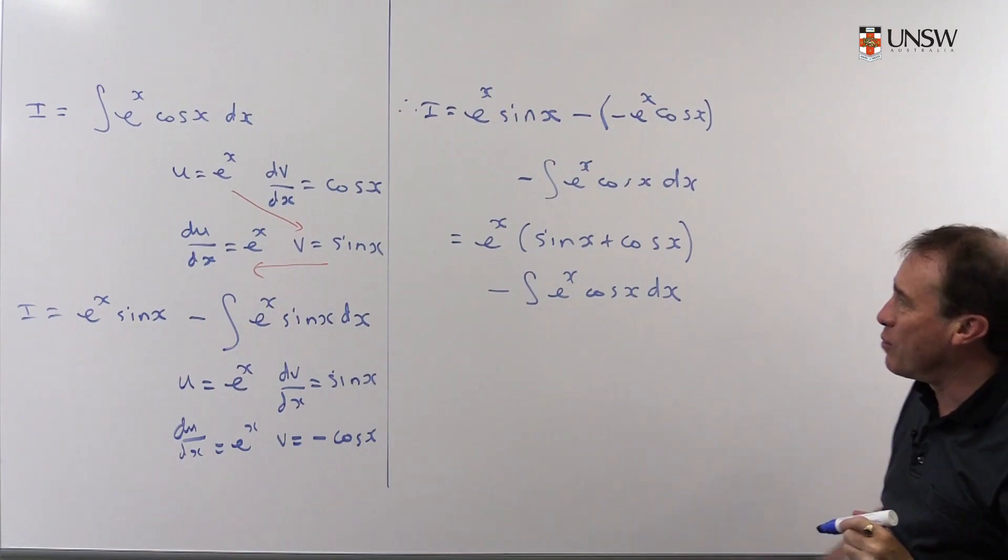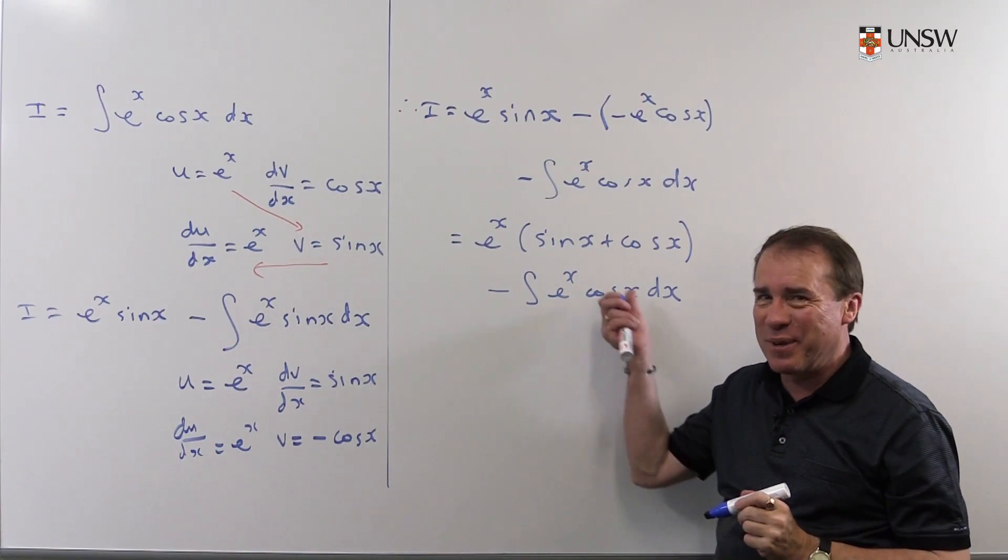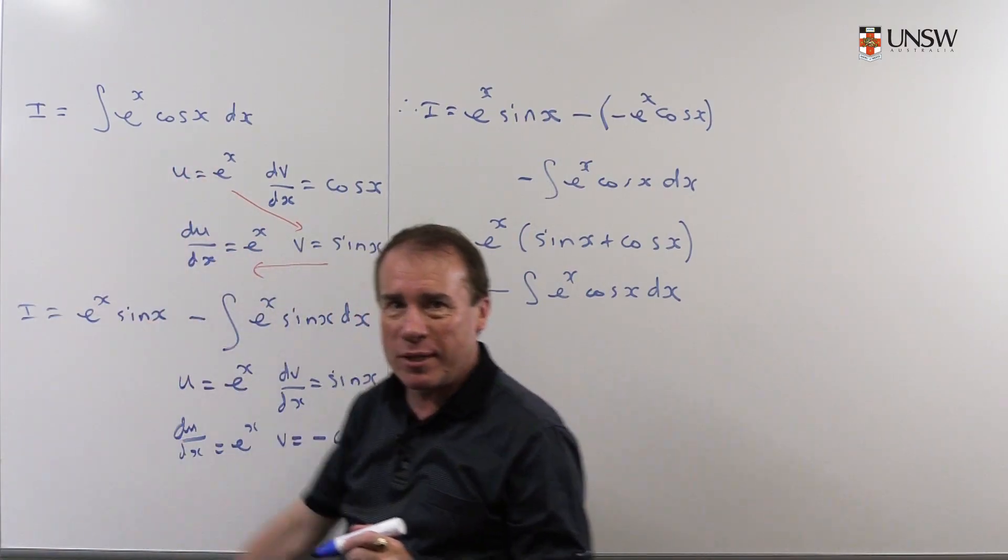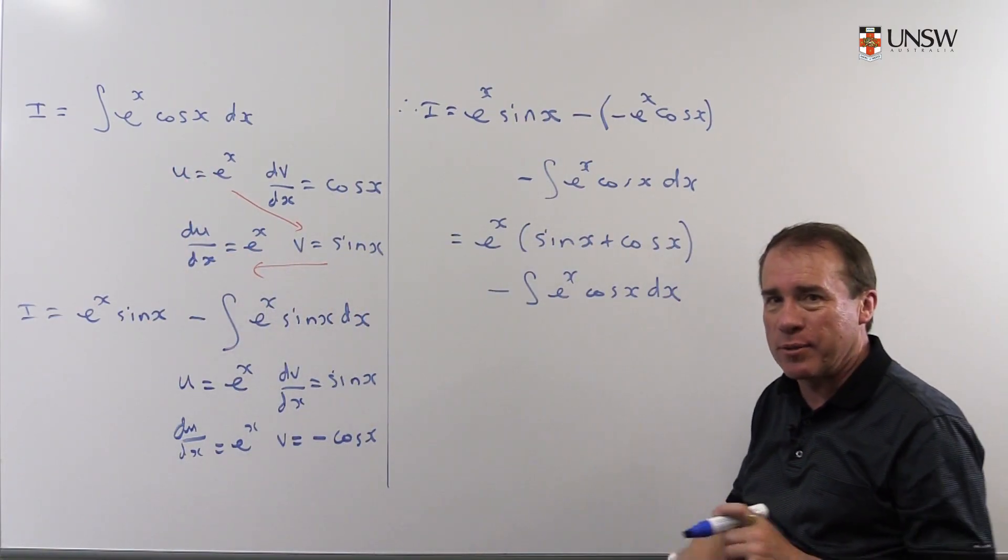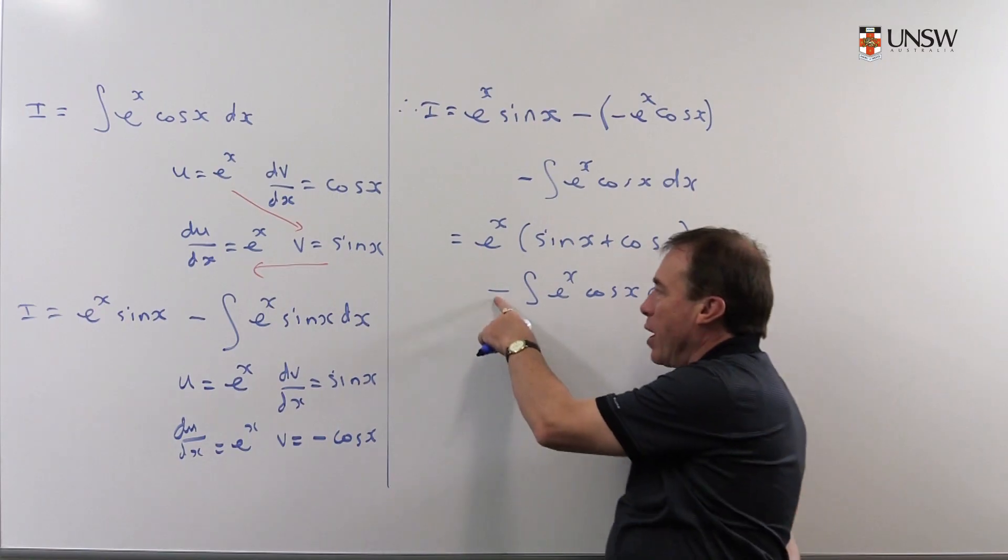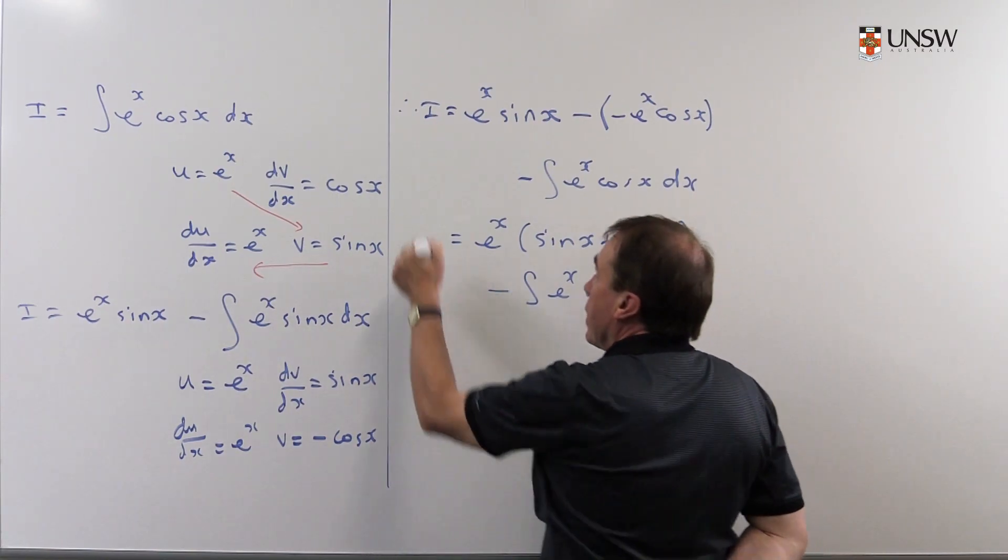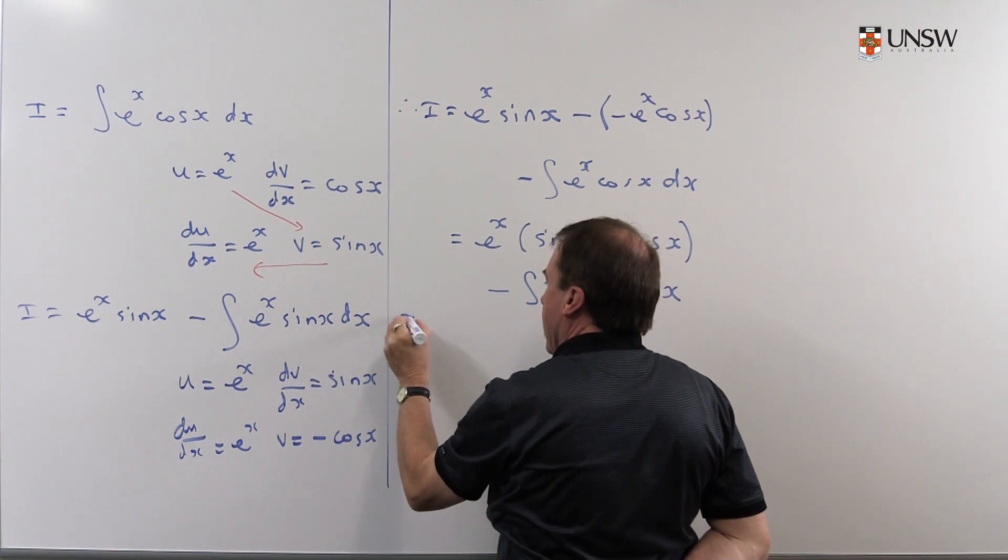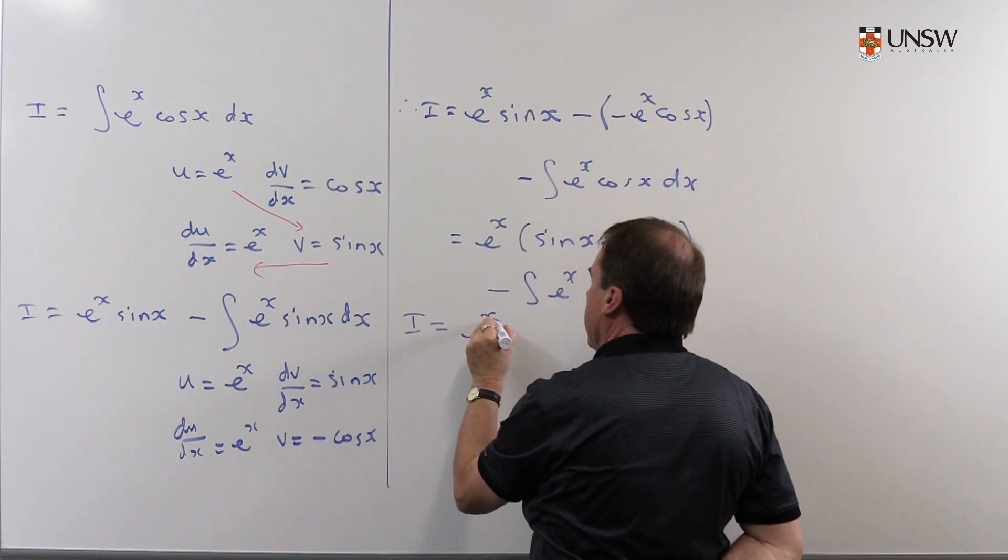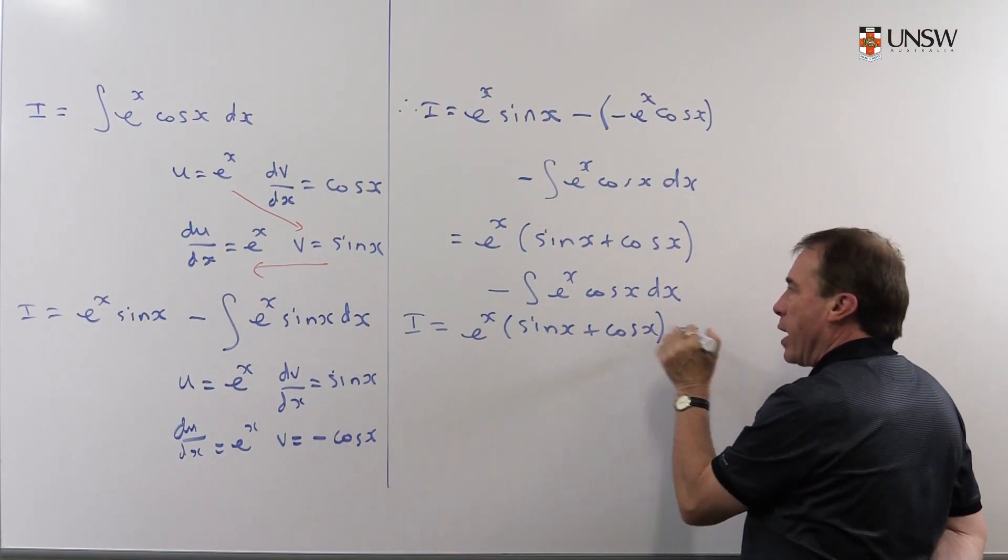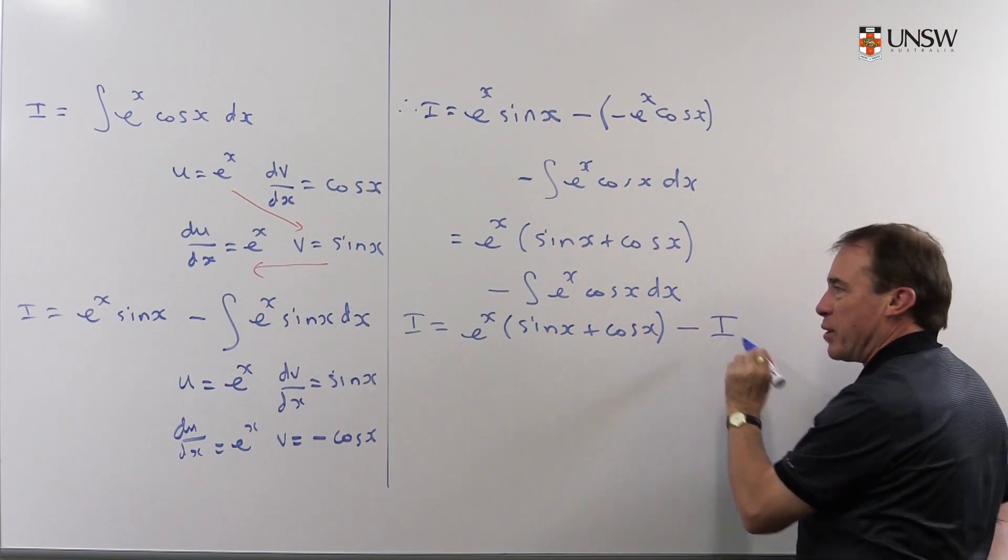And now you should be saying, well, hang on, what have you done? You've gone around in circles because you've got back to where you started from. I got back to the integral I started from e to the x cos x, but there's a nice minus sign here. So if I write this symbolically, that means the integral I started with is e to the x times sin x plus cos x, but minus the integral I started with.